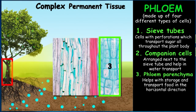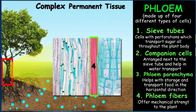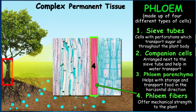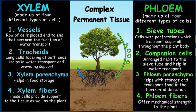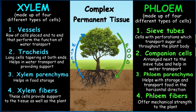And lastly, just like xylem fibres, we have phloem fibres that offer support and mechanical strength to the plant. So we have seen how food and water are transported to all the parts of the plant. Next time when you see a plant, take a moment to observe it and appreciate this amazing function performed by it.